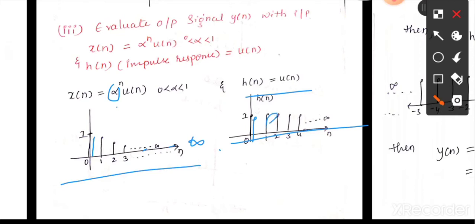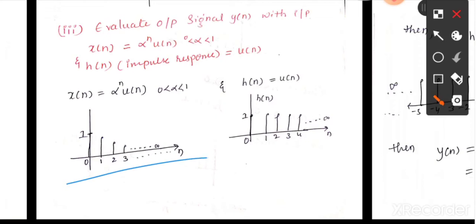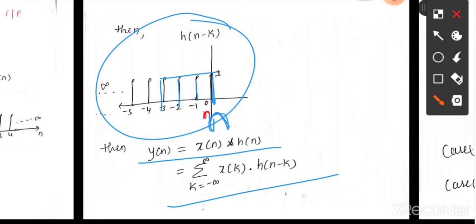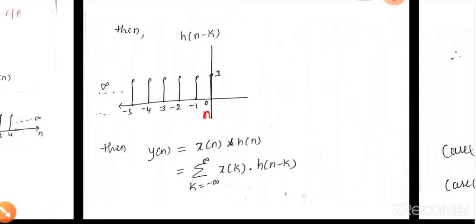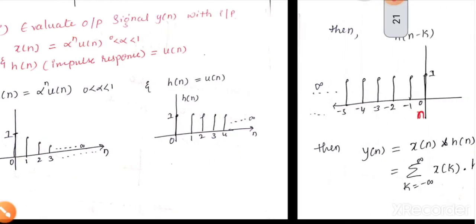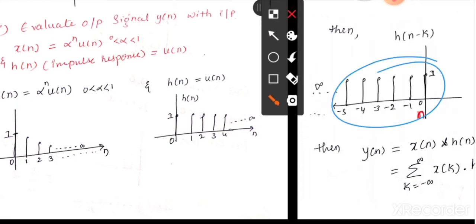h(n) = u(n) runs from 0 to infinity with a magnitude of 1. Now we have both signals. We need to decide which signal to reverse. Let's take h(n) and find its inverse. h(n-k) means reversed and shifted — so it goes at 0, 1, -1, -2, -3 and so on with magnitude 1. We need to find y(n) = summation from -∞ to +∞ of x(k) · h(n-k). Keep x(n) constant and shift the reversed signal. Both signals extend to infinity, so we may get two or three cases.